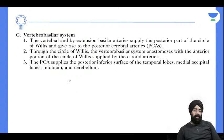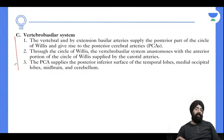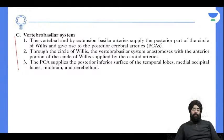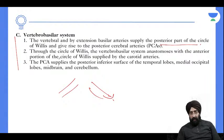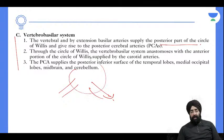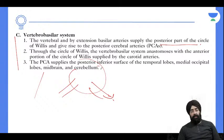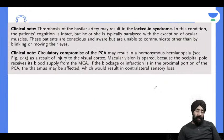There is a third system — the vertebrobasilar system. The two vertebral arteries join to form the basilar artery. The vertebrobasilar system connects to the posterior part of the Circle of Willis, where two thick posterior cerebral arteries emerge and join the anterior systems. The posterior cerebral artery supplies the posterior inferior surface of the temporal lobe, medial occipital lobe, midbrain, and cerebellum.